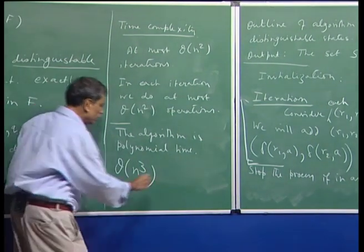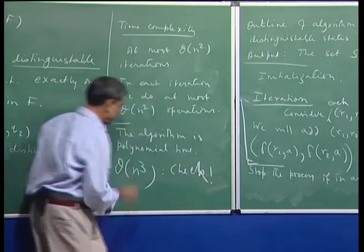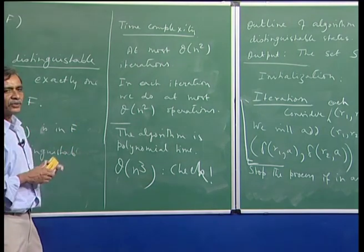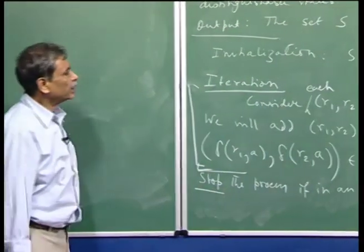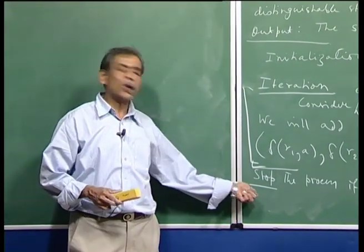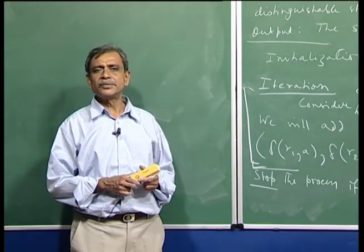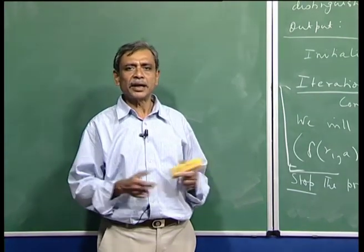You should be able to check that this is indeed O(n³). Now let us talk about the correctness of the algorithm. When is it correct? If, when we stop, we have discovered all pairs of states which are distinguishable. We end with a set S, and if S contains every pair of distinguishable states, the algorithm is correct.